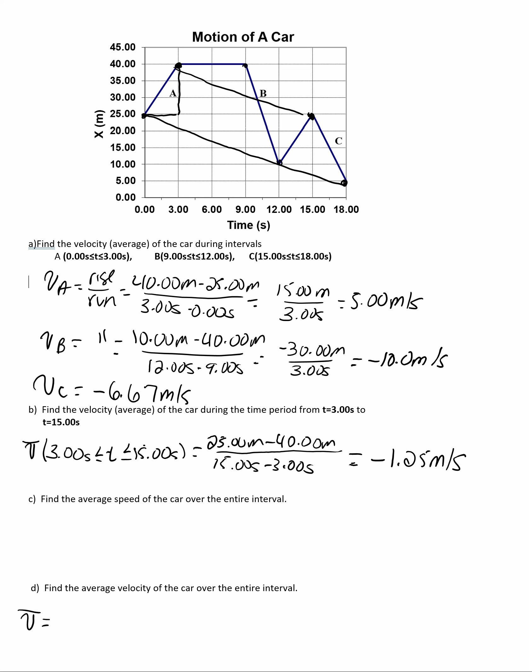So, V bar over that entire interval, 5 meters minus 25 meters over 18 seconds minus 0 seconds. So, you have negative 20 meters over 18 seconds, or negative 1.11 meters per second.